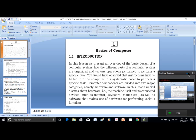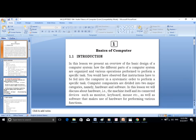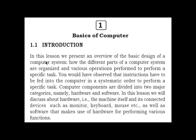Chapter 1: Basics of Computer. In this lesson, we present an overview of the basic design of a computer system, how the different parts of a computer system are organized, and various operations performed to perform a specific task. You would have observed that instructions have to be fed into the computer in a systematic order to perform a specific task. Computer components are divided into two major categories, namely hardware and software.